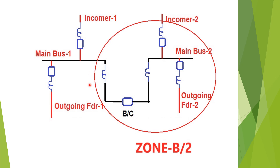Zone B or zone 2 formation is done via the CT connected for incomer two, outgoing feeder two, and the CT connected towards the main bus one side of the bus coupler bay. If a fault occurs within this zone, the incomer two breaker, outgoing feeder two breaker, and bus coupler breaker will be tripped. If a fault occurs at a point within both zones, both zone A and zone 2 will trip.